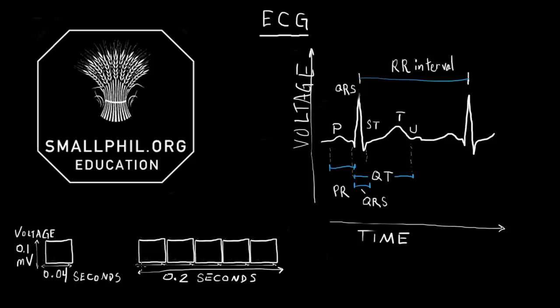We look at these particular boxes in chunks of five, and if you have five small boxes, we have 0.2 seconds. So, just to give you an orientation of the actual small boxes on the ECG paper, and what they actually mean.